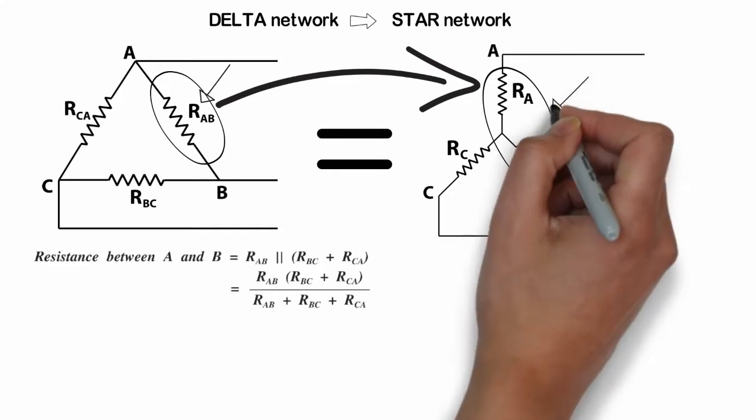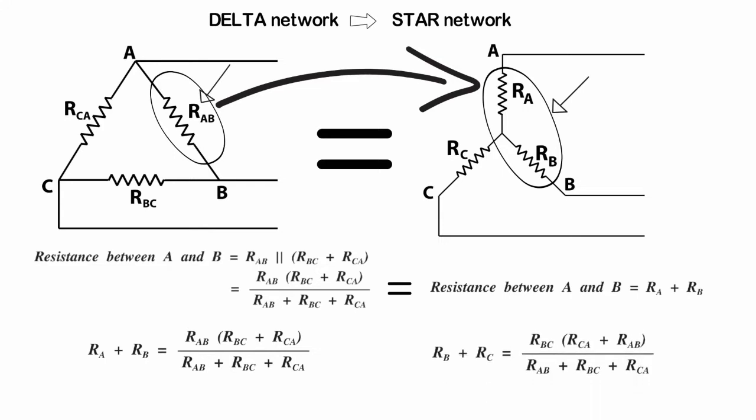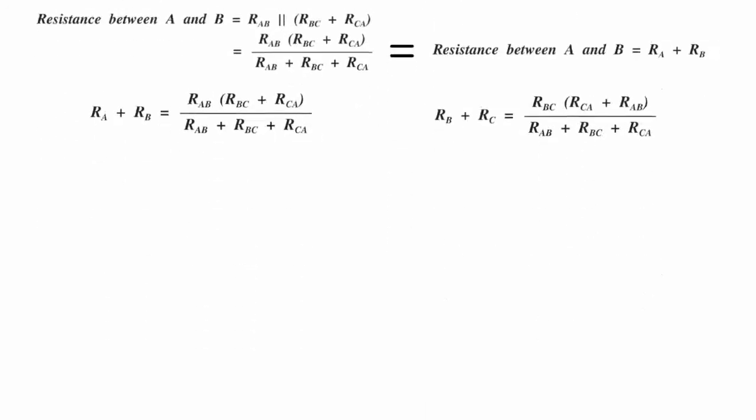Similarly, we can show that RB plus RC and RC plus RA equal their respective formulas. Since both networks are electrically equivalent, we can say RA plus RB equals RAB into RBC plus RCA divided by RAB plus RBC plus RCA. Similarly, we can show that RB plus RC and RC plus RA equals RCA into RAB plus RBC divided by RAB plus RBC plus RCA.